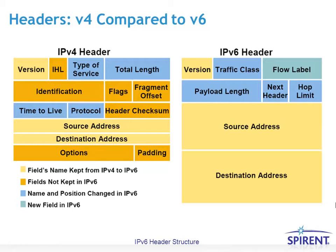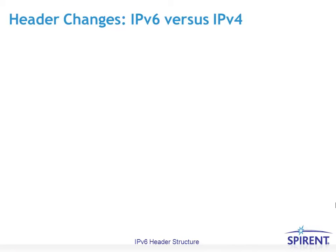Comparing side by side, another difference is that the IPv6 header is a bit larger, which makes sense as the address space is increased from 32 to 128 bits. I'm going to go over in more detail the changes between the IPv6 and IPv4 headers.